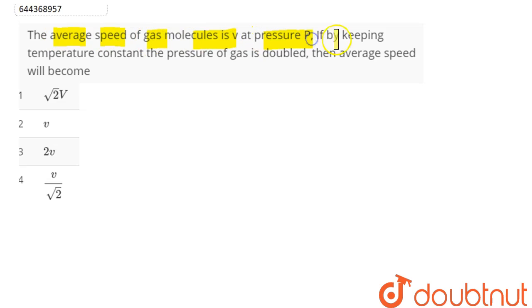is v at pressure P. If by keeping temperature constant the pressure of gas is doubled, then average speed will become?